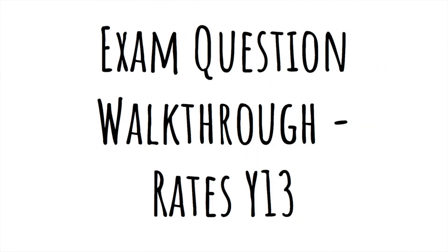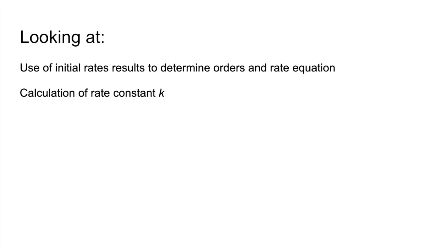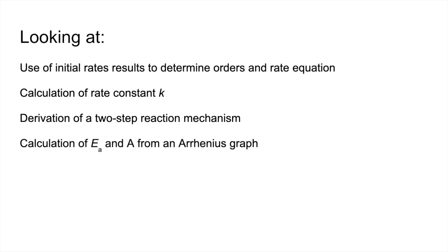I've got an exam question walkthrough here for year 13 rates. The question looks at using initial rates results to determine orders and the rate equation, calculation of the rate constant k, the derivation of a two-step reaction mechanism, and the calculation of activation energy and the pre-exponential factor from an Arrhenius graph.